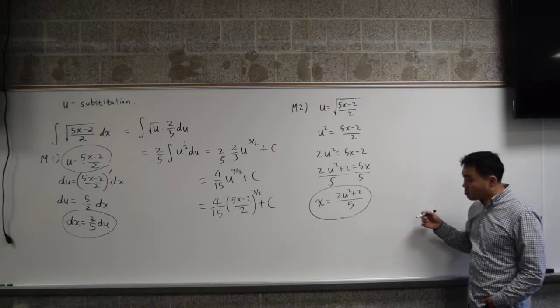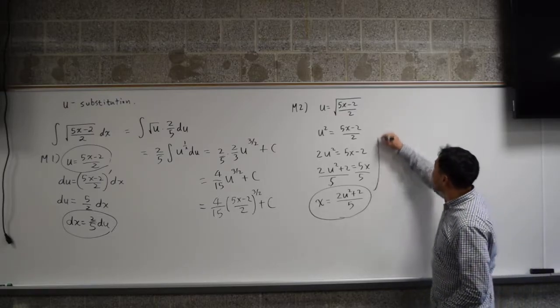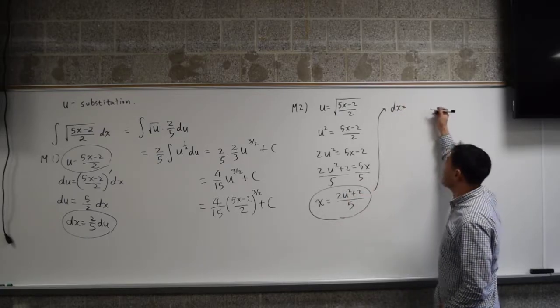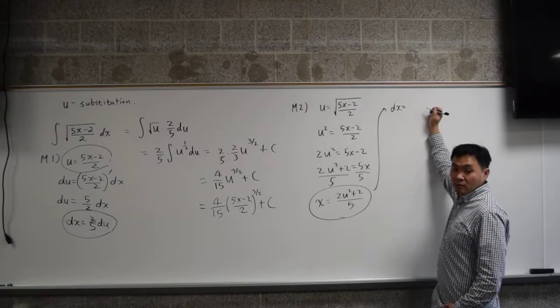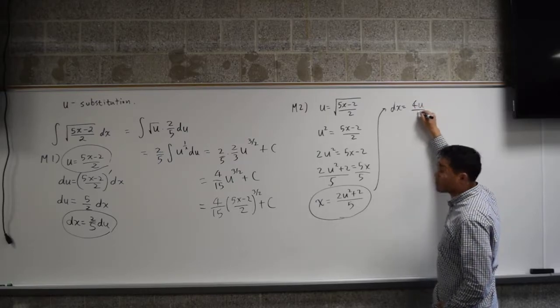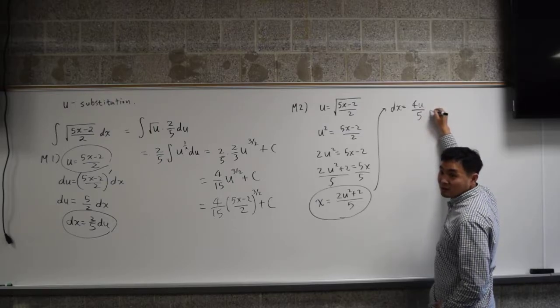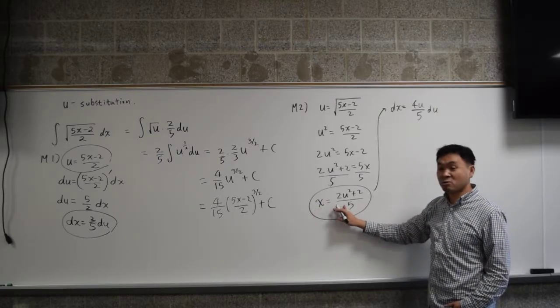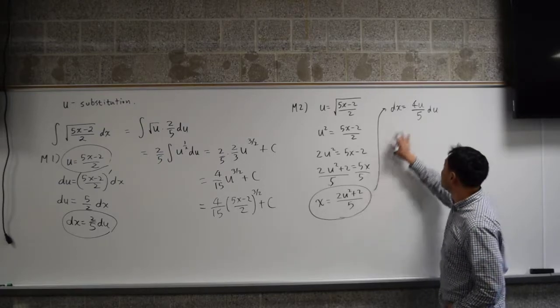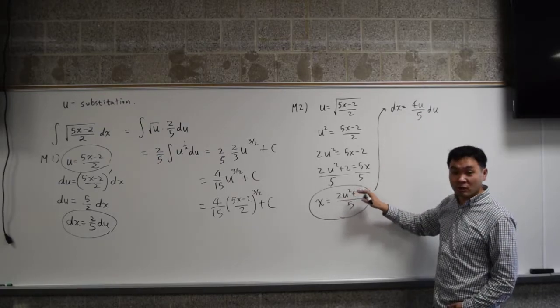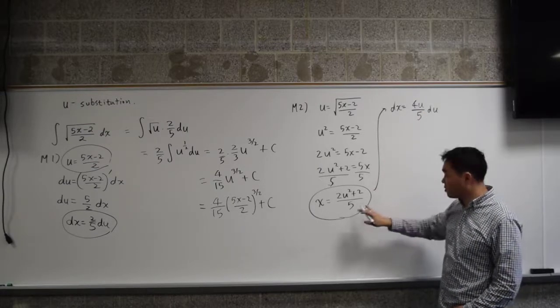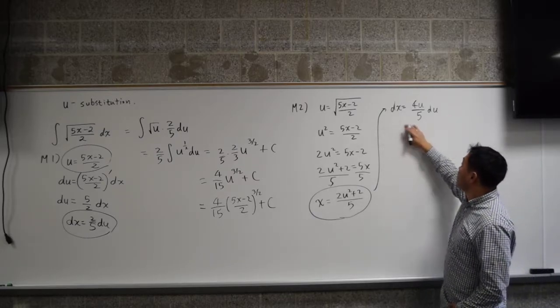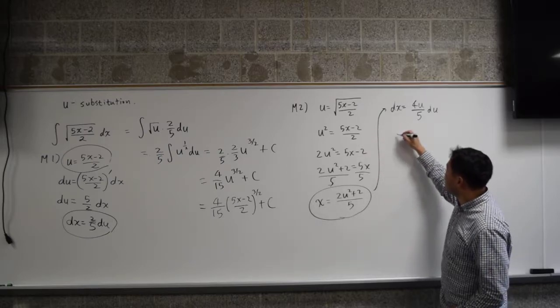But that's not what we want. We want actually dx. So what do we do? dx is—you differentiate this, right? What do you get when you differentiate? 4u. 4u over? 5. And then times? du. Right? You have to say dx is equal to the derivative of this times du. So you differentiate this, which gives you 4u over 5. See, 2u squared differentiates to 4u and 2 differentiates to 0. This 5 in the denominator is just the constant multiple. So that's what you get. All right, so we have this. And then we go back and rewrite the integral.